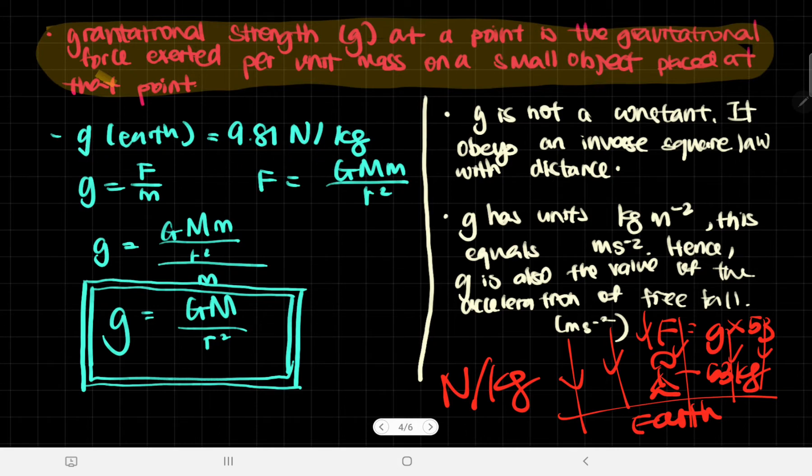The g of the Earth is 9.81 newtons per kg, as we've probably already seen before. We know that force, as we've seen in the previous video, is basically GMm divided by r squared. And G is a universal gravitational constant. So since g is F divided by m, g is this entire thing divided by m.